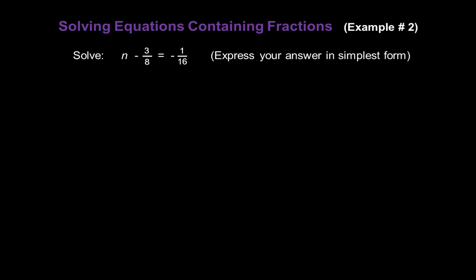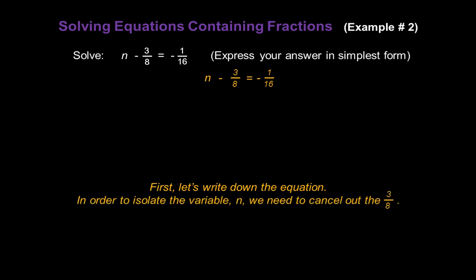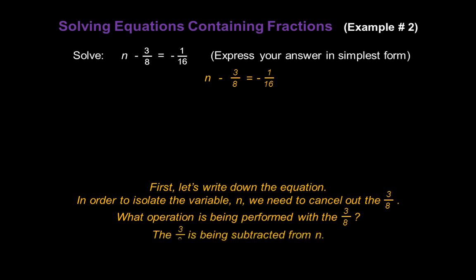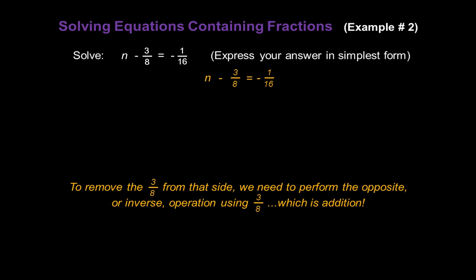Now let's solve n minus three-eighths equals negative one-sixteenth, again expressing the answer in simplest form. Start by writing down the equation: n minus three-eighths equals negative one-sixteenth. In order to isolate the variable n, we have to cancel out the fraction three-eighths. This time our fraction three-eighths is being subtracted from the variable n, so to remove the three-eighths from that side, we need to perform the opposite or inverse operation using three-eighths.